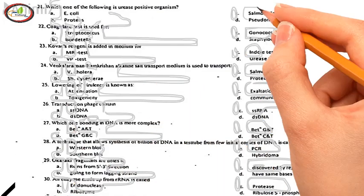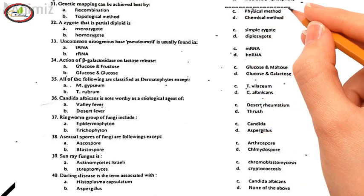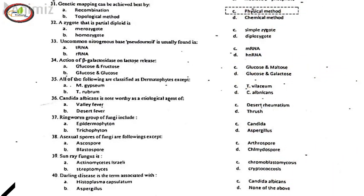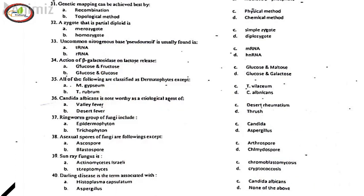31. Genetic mapping can be achieved best by, C. Physical method. 32. A zygote that is partial diploid is, A. Merozygote. 33. Uncommon nitrogenous base pseudouridine is usually found in, A. tRNA. 34. Action of beta-galactosidase on lactose releases, D. Glucose and galactose.